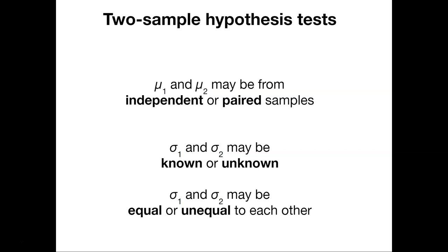So we can do two sample hypothesis tests to do this. Mu1 and mu2 might be independent, or they might be paired samples. Sigma1 and sigma2, or the standard deviation for population 1 and the standard deviation for population 2, might be known or unknown. And then sigma1 and sigma2 could be equal to one another, or they could be unequal to one another. A lot of these properties will depend on which kind of statistical test we run, and we might get a different answer depending on those assumptions.